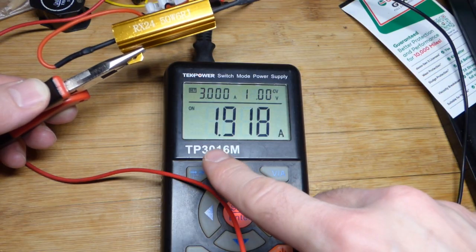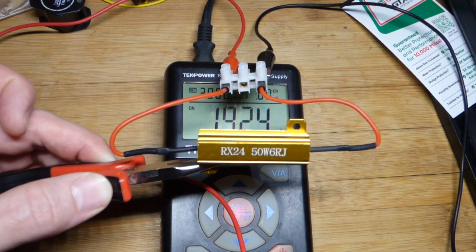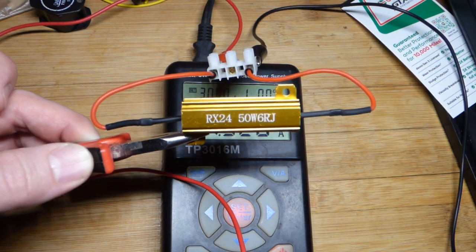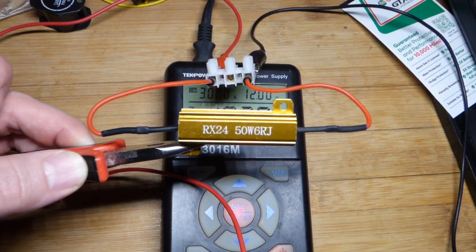And then now we'll go to 12 volts right there. That's 2 amps of current. So 12 volts times 2 amps of current is 24 watts. Now that's getting somewhat high. It's about half of 50 watts right there.